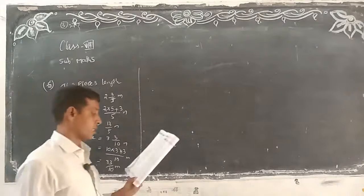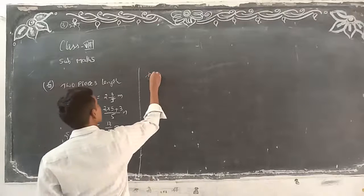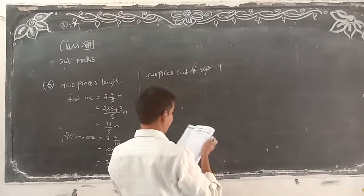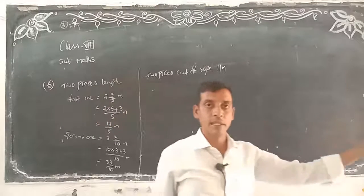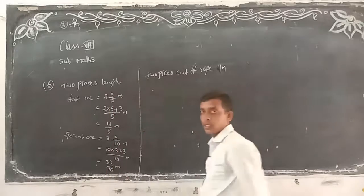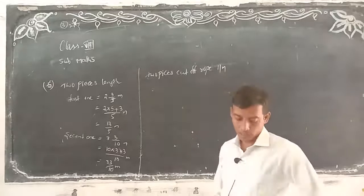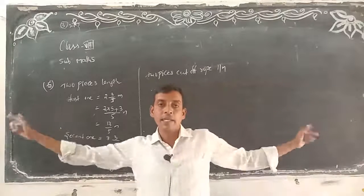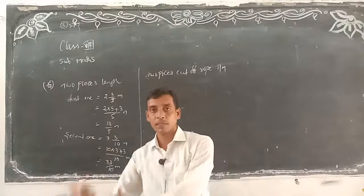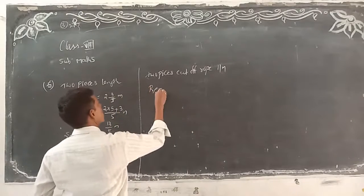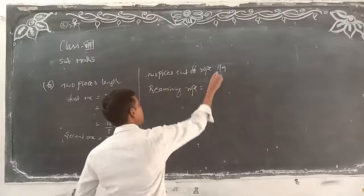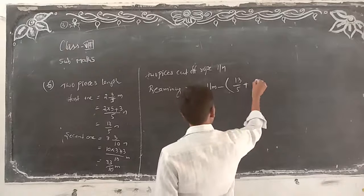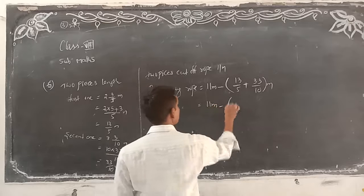These are the two pieces. They are cut off from a rope. For how many meters total? 11 meters — there is one 11-meter rope. From that rope they cut two pieces. What is the length of the remaining rope? Remaining rope is equal to 11 meters minus these two pieces: 13 by 5 plus 33 by 10 meters. Take LCM of 5 and 10, which is 10.